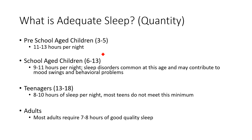A question I get asked often is: what is adequate sleep? What is good sleep? It varies and depends on a few things. For adults, we're probably going to need about seven to eight hours. That goes back to remembering that to cycle through each of those five stages, we need about four to five cycles, and those take about an hour to an hour and a half. So we need enough time to cycle through all the stages — seven to eight hours of good quality sleep.